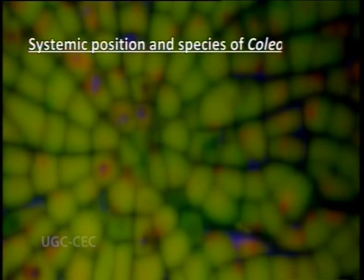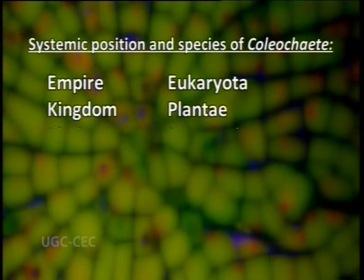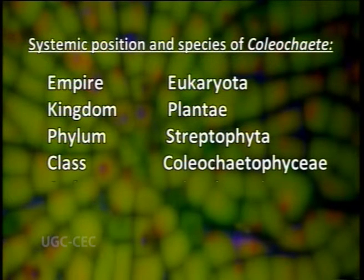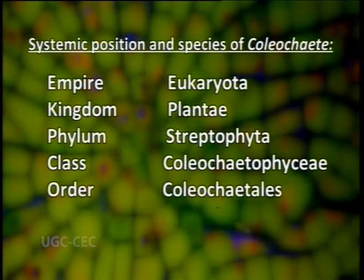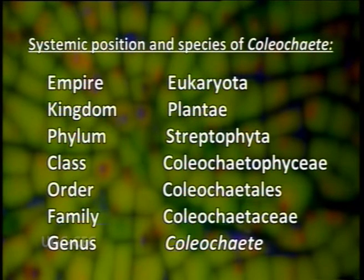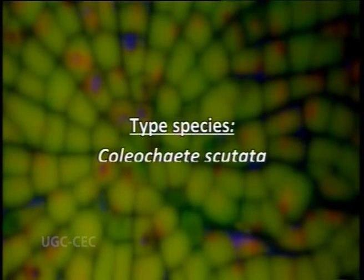Let's analyze its systematic position and number of species. The algal genus belongs to Empire Eukaryota, Kingdom Plantae, Phylum Streptophyta, Class Coleochaetophyceae, Order Coleochaetales, Family Coleochaetaceae, and Genus Coleochaete. The type species of the genus is Coleochaete scutata. There are 31 species and infraspecific names in the algal database, out of which 16 have been flagged as taxonomically accepted.